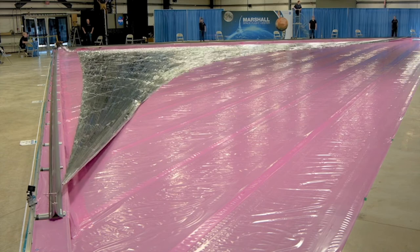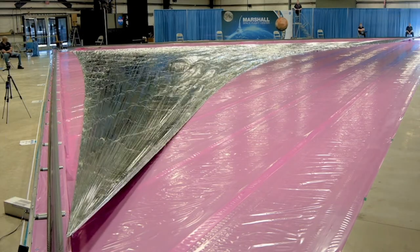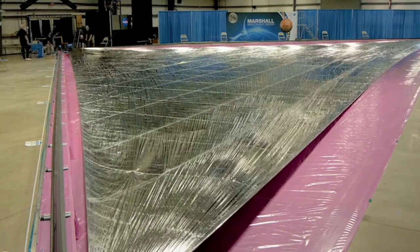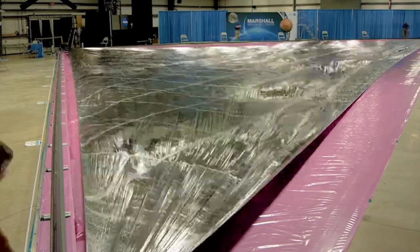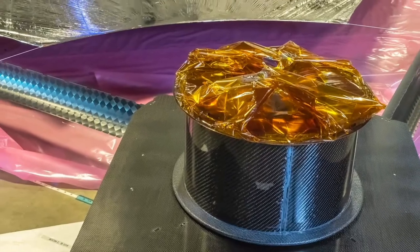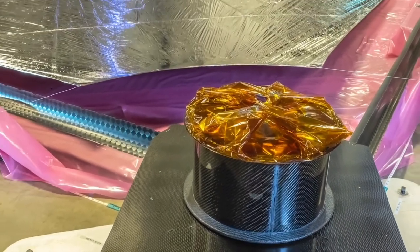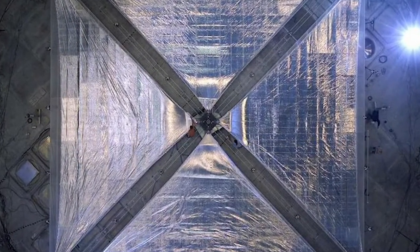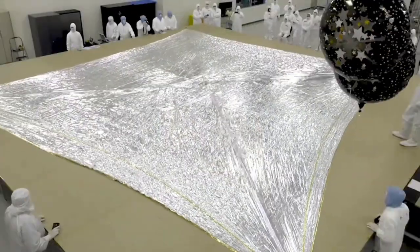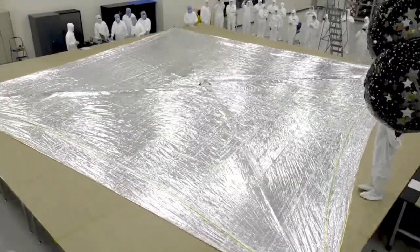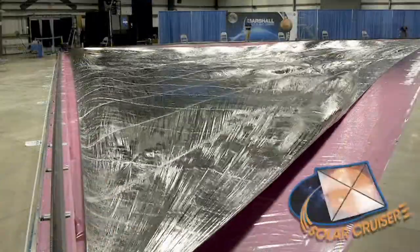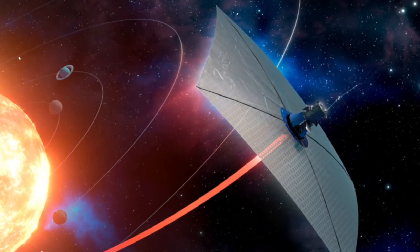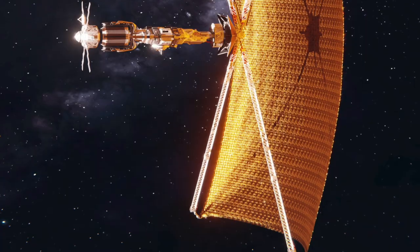The journey of solar sails from theoretical speculation to practical implementation began with pioneers like Pyotr Lebedev and Ernest Nichols, who conducted experimental demonstrations of light pressure. Konstantin Tsiolkovsky and Friedrich Zander independently proposed using sunlight for spacecraft propulsion in the early 20th century. Even Carl Sagan was captivated by the concept and envisioned a solar sail spacecraft rendezvousing with Halley's Comet. By 1976, formal efforts were underway at institutions like the Jet Propulsion Laboratory to design and develop solar sail technology for space missions. This culminated in successful missions like IKAROS and continued exploration of the potential of solar sails in space travel.